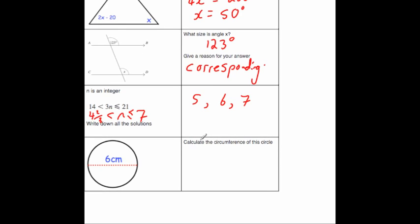And finally, the question says calculate the circumference of the circle. So the circumference is equal to pi times diameter. It's going to be pi times 6. And pi times 6, you could leave it as 6 pi centimeters.